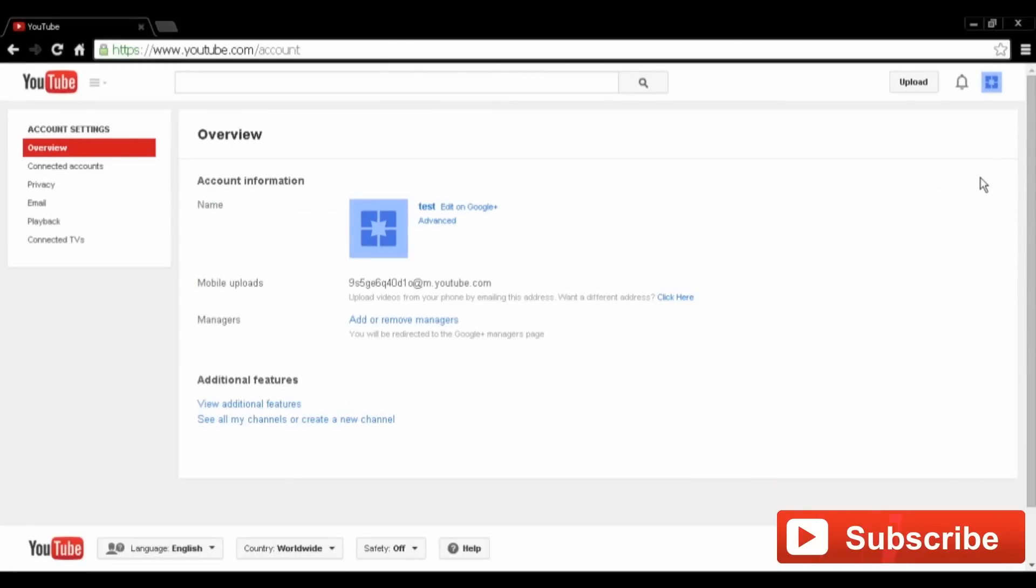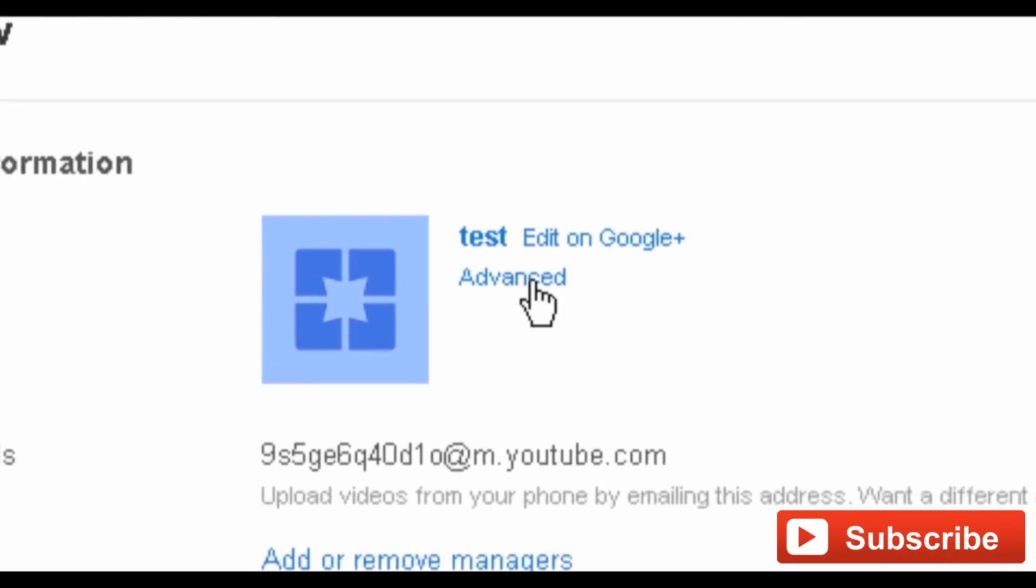You should now be in your account settings page. In the middle of the page, just beside your profile picture and beneath your channel name, you should see the word Advanced. Click that now.